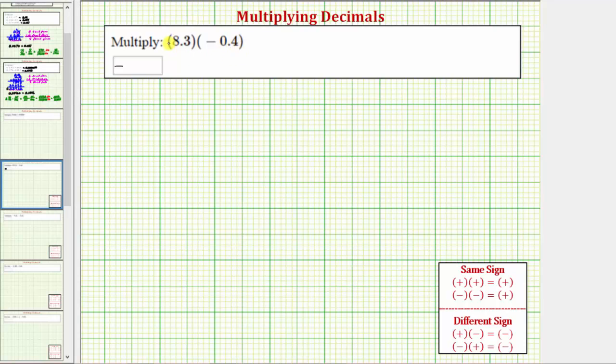And now we'll focus on determining the product of positive 8.3 and positive 0.4. Let's first write the product vertically. 8.3 times 0.4. We're leaving the sign off negative 0.4 here because we already determined the product will be negative.